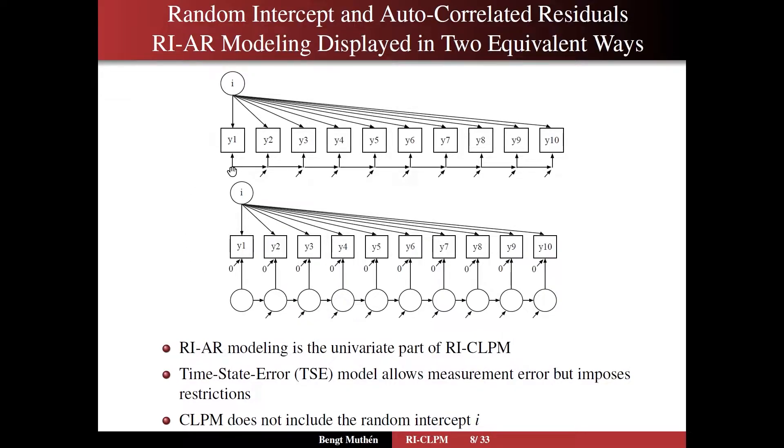The epsilon is not pre-multiplied by any loading and it is the only residual that affects the Y. So drawing it in this way it looks more like the univariate part of the RICLPM. We have the relationships among the latent variables down here and not among the observed Y variable as in the classic CLPM.